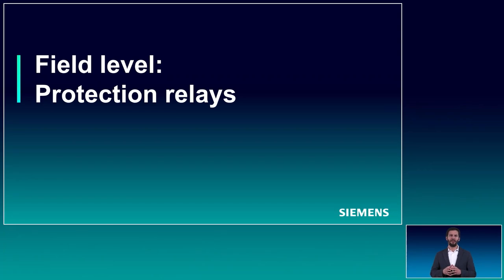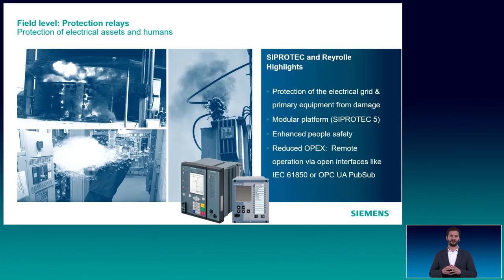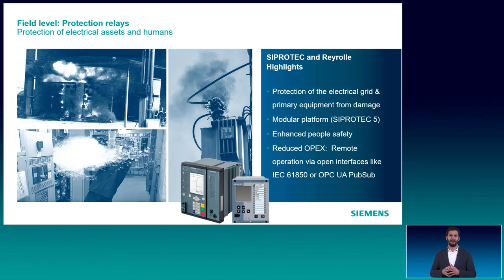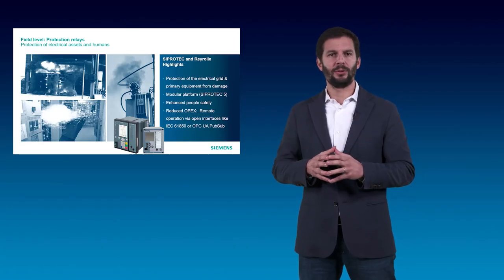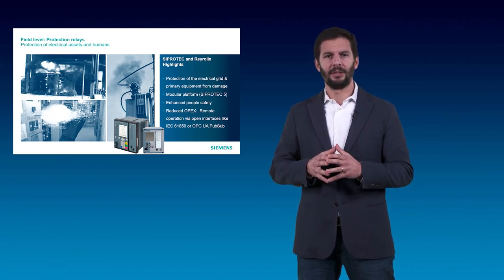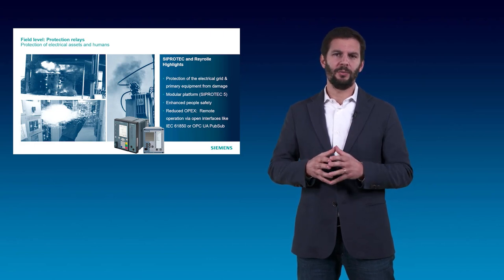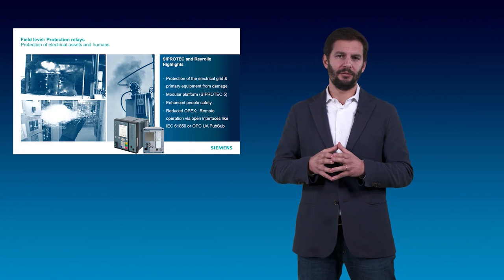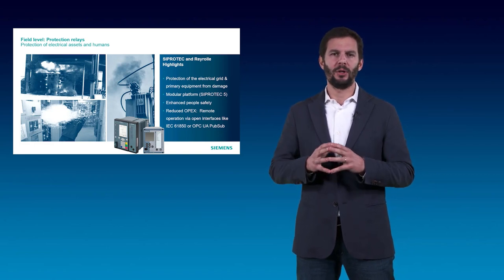Let's talk about the main application cases that protection relays can address on the field level. A big challenge for the industrial operator is a fault in the electrical infrastructure that may injure people or damage high-investment assets. Protection devices are the first line of defense and safety, capable of isolating faults selectively within milliseconds — protecting human life and assets from damage and preventing overload of primary equipment. Siemens offers in this market two families of protection devices, Cyprotec and Reyrolle, running state-of-the-art communication standards such as IEC 61850, meeting the demanding requirements of modern industrial operation.